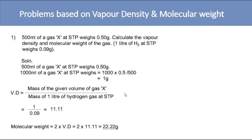Problems based on vapor density and molecular weight. Problem 1: 500 ml of a gas X at STP weighs 0.50 grams. Calculate the vapor density and molecular weight of the gas. Given: 1 liter of hydrogen at STP weighs 0.09 grams. Since hydrogen is given as 1 liter, we will calculate gas X for 1 liter as well. Using the unitary method: 1000 ml of gas X at STP weighs 1000 × 0.50 / 500 = 1 gram.